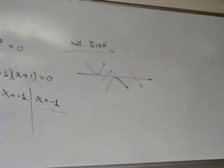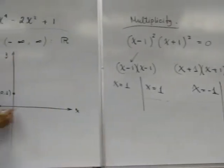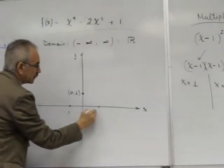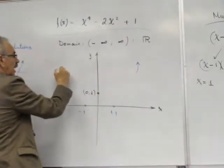So now we can graph this question very fast. We know the interceptions are at plus 1, 1, and minus 1. Here minus one, here plus one. We know that this function opens up on the left, on the right.